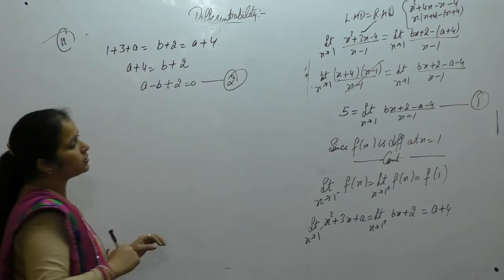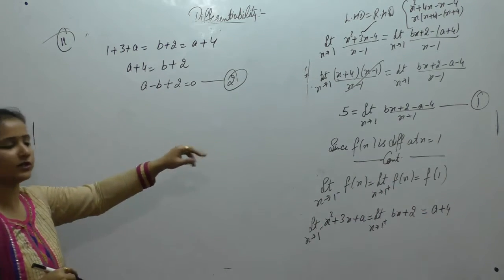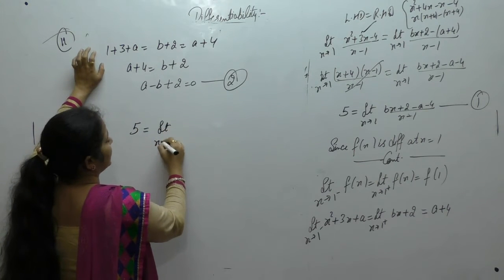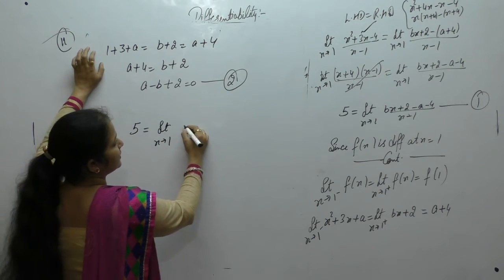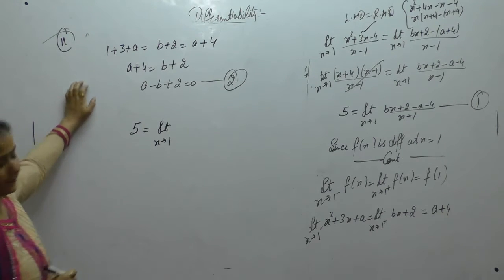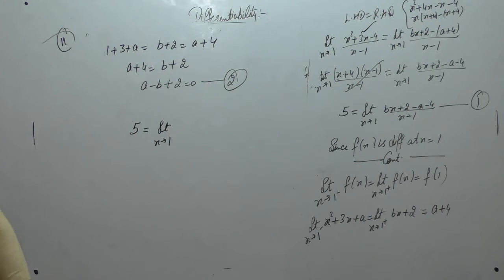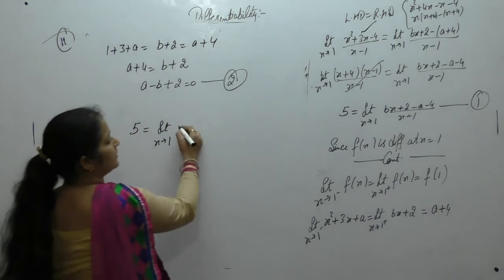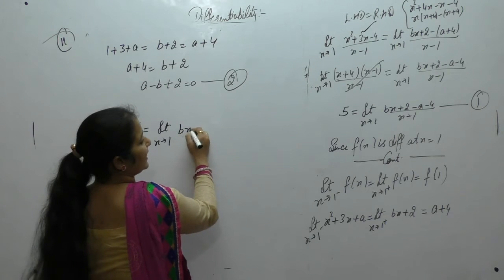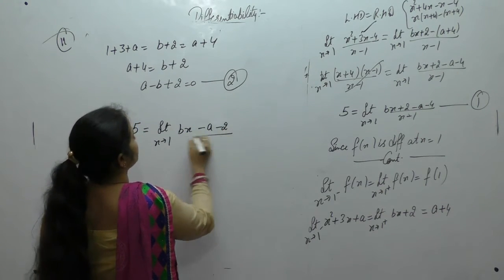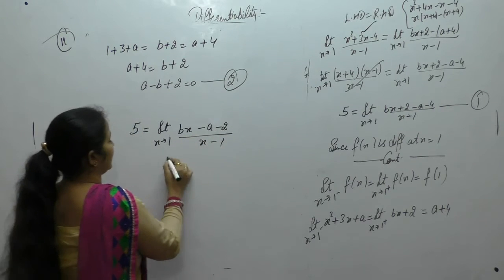Now use equation 2 in equation 1. Equation 1 was: 5 is equal to limit x tends to 1. We can write it as bx minus a minus 4 plus 2 minus 2, all upon x minus 1.